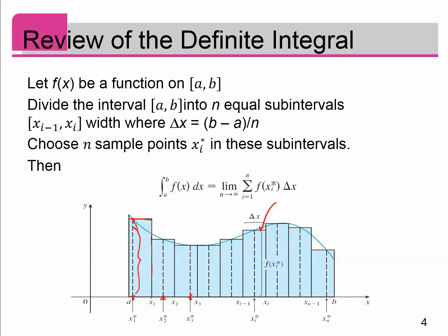So like this i-th rectangle, the area would be the height, which is f of x_i star times delta x. But then that's the area of this one, so that's like the i-th area, and so we sum all of those up. If we put those in here for every possible i, take the sum, then this sum right here is the sum of all of these rectangles, which is an approximate area, not the exact area. It's approximate because there's holes in here.